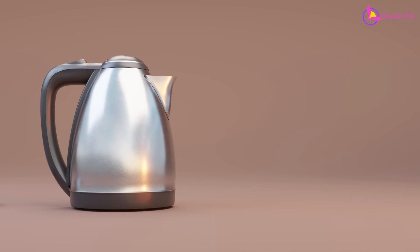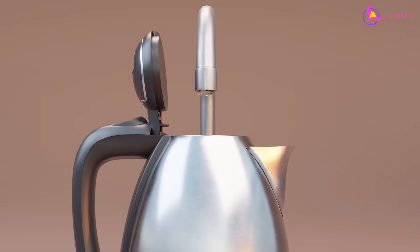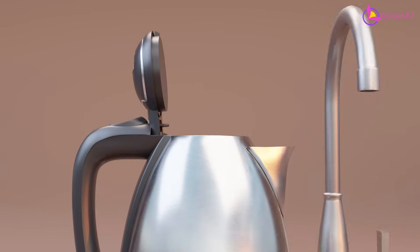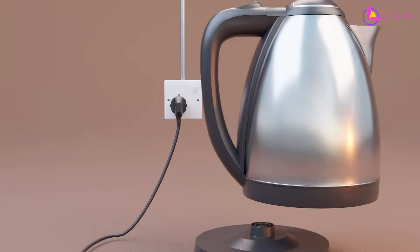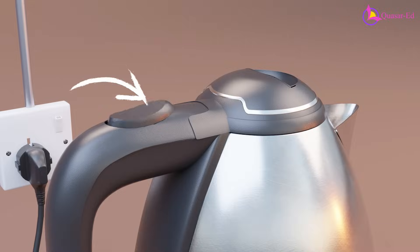To boil water using an electric kettle, first fill the kettle with water. Then connect the base plate to your wall outlet and place the kettle body on the base and push the switch.